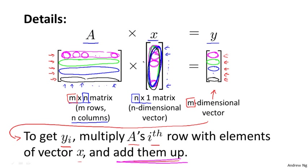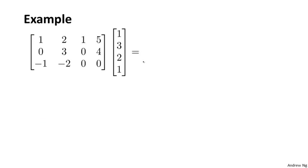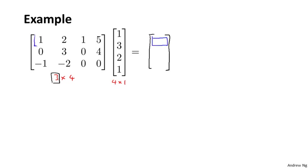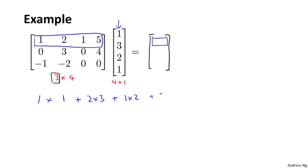Let's do one more example. Looking at the dimensions: this is a 3 by 4 dimensional matrix. This is a 4 dimensional vector, or a 4 by 1 matrix. So the result of this product is going to be a 3 dimensional vector — a vector with room for 3 elements. For the first element, I'm going to take these 4 numbers and multiply them with the vector x. So I have 1 times 1, plus 2 times 3, plus 1 times 2, plus 5 times 1, which is 1 plus 6 plus 2 plus 5, giving me 14.